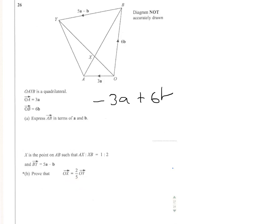So we'll start off by looking at OX first. So to go from O to X, I'm going to need to go from O to A and then from A to X. But remembering that A to X is one third of A to B that we already have. So I'll write that down.